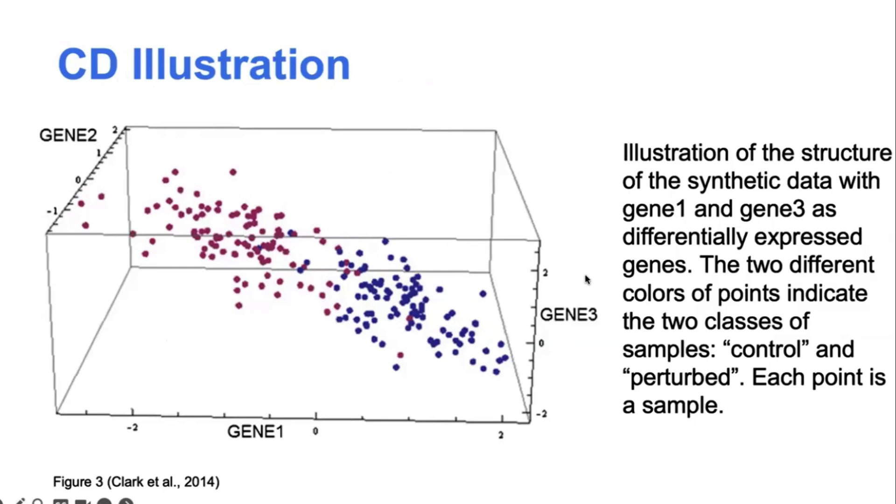So for the vector computation, we would first find the separating hyperplane. And then the characteristic direction vector is the normal vector to this separating hyperplane. And we can see this vector lies almost entirely along the axes of genes one and three without much change along the gene two direction.